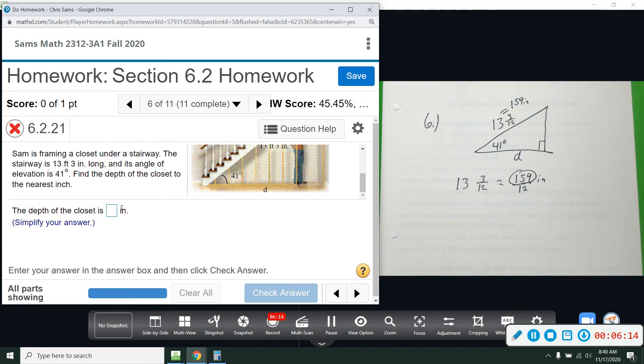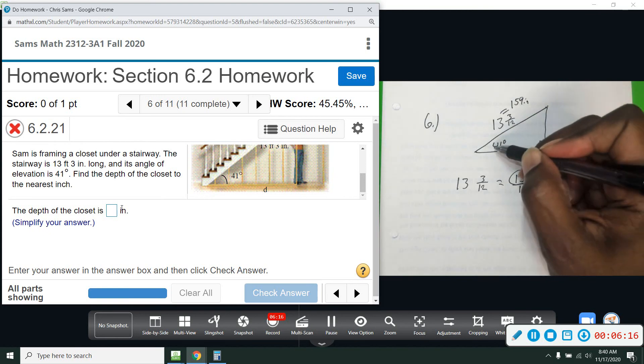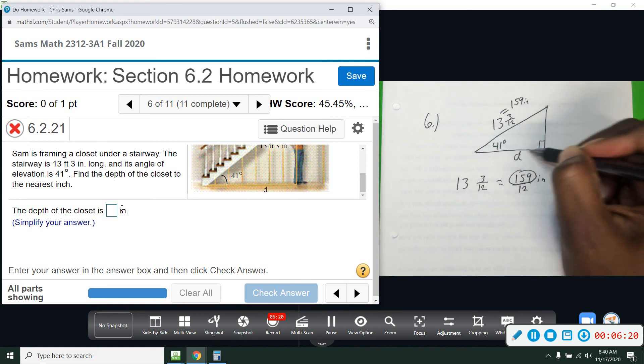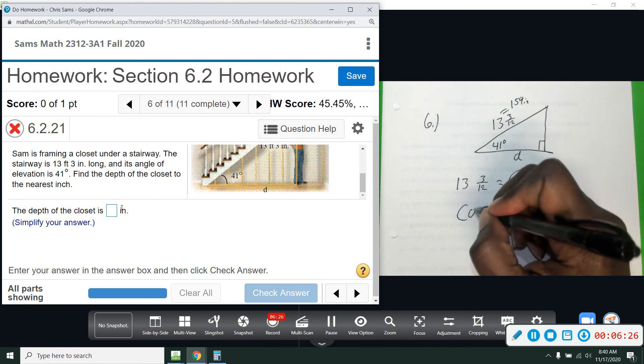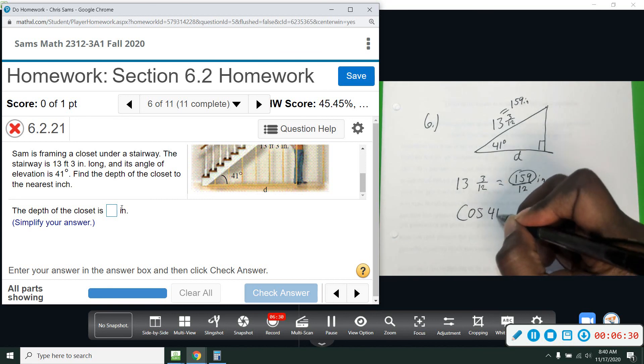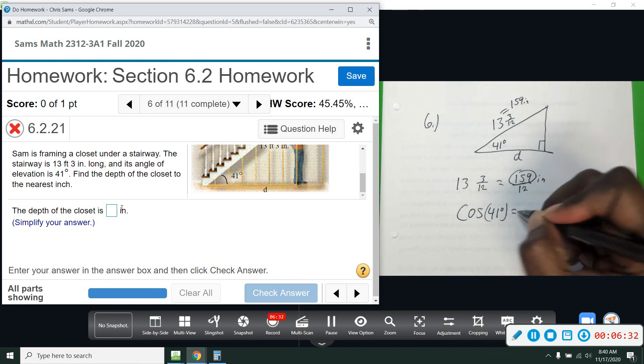Alright. Based on this, we have this angle. This side that we're looking for is adjacent, and then this is hypotenuse. So adjacent and hypotenuse, that would be cosine. Cosine of 41, of that angle, is equal to adjacent over hypotenuse, which is going to be D over 159 inches.